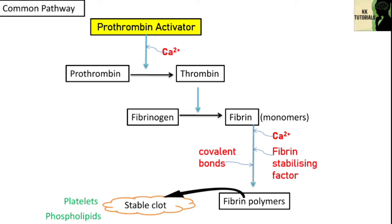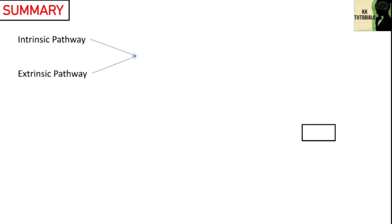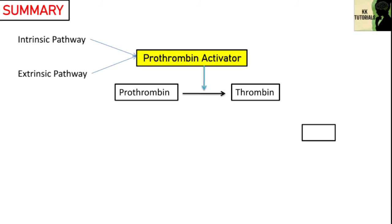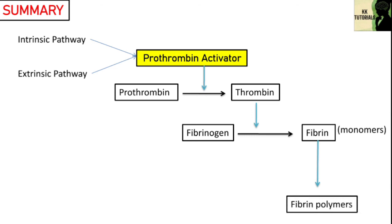Here is the summary: we discussed the coagulation cascade involving the intrinsic pathway and extrinsic pathway. Both pathways lead to formation of prothrombin activator, which converts prothrombin to thrombin. Sufficient thrombin converts fibrinogen into fibrin monomers. In the presence of calcium ions, factor 13 converts fibrin monomers into fibrin polymers, which attract phospholipids, platelets, and other substances to form a stable clot.